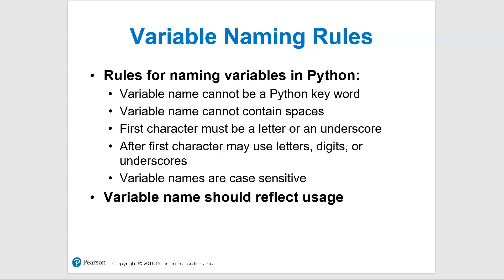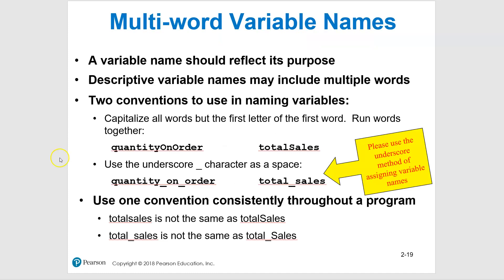For descriptive variable names with multiple words, there are two common conventions. The first is camelCase: capitalize the first letter of each new word except the first — no spaces, no underscores. The second is the underscore method: all lowercase with underscores between words, like 'quantity_on_hand' or 'total_sales'. These two versions of the same name are completely different to the computer.